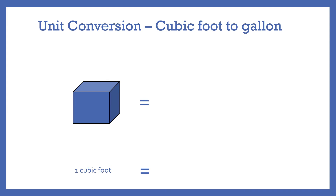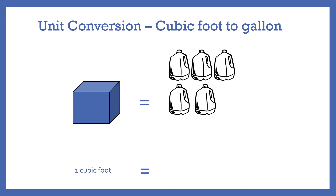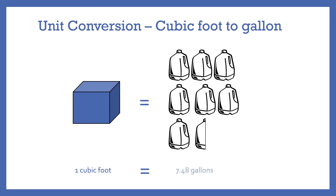From a volumetric standpoint, 1 cubic foot is equal to 7.48 gallons. So if you have a bucket that is exactly 1 cubic foot, you could pour 7.48 gallons of water into that bucket to fill it up.